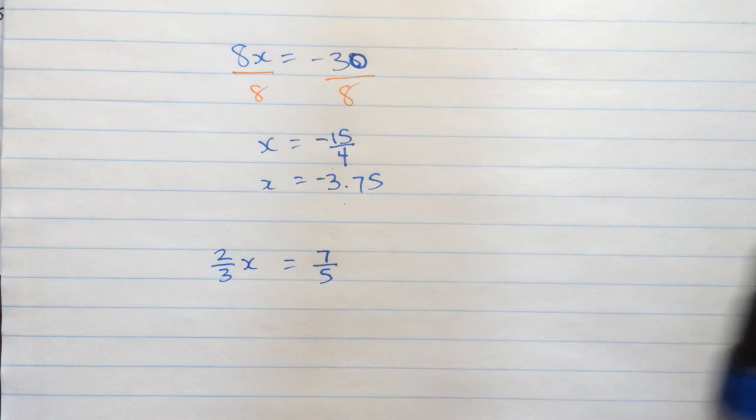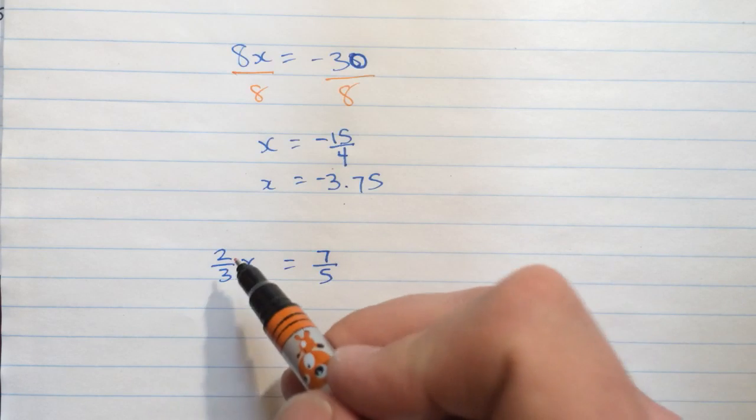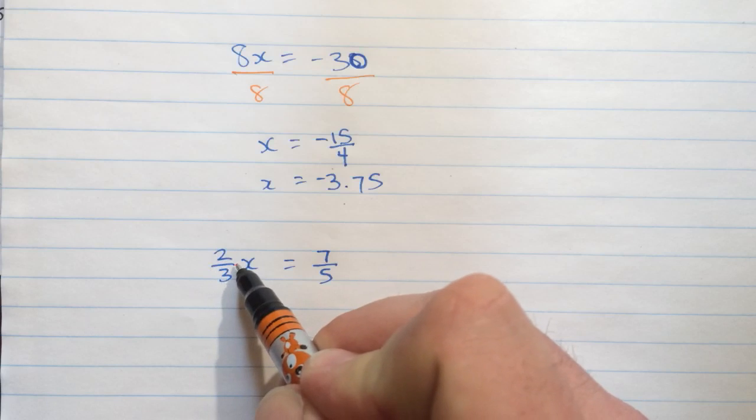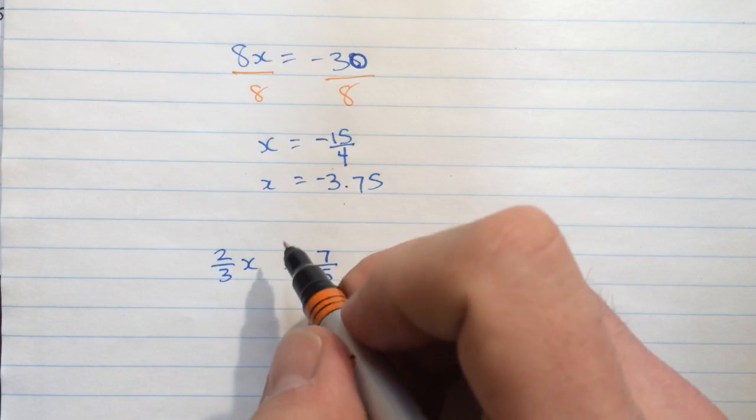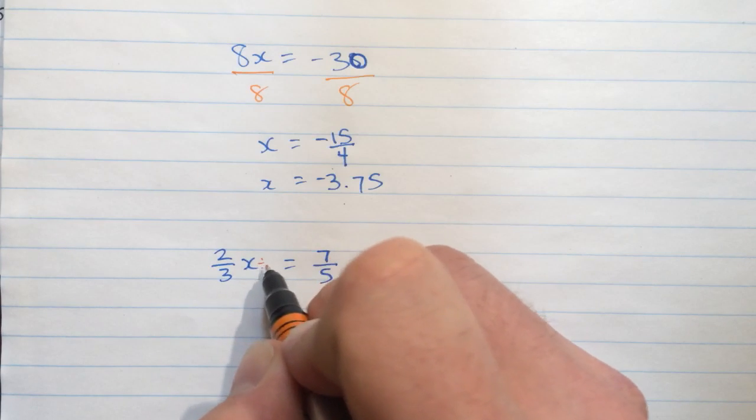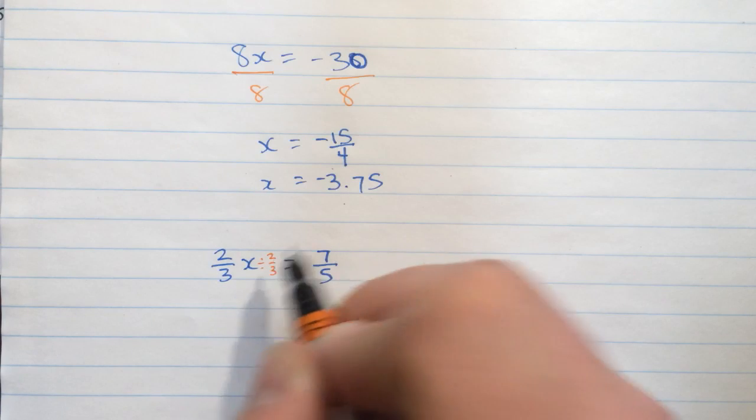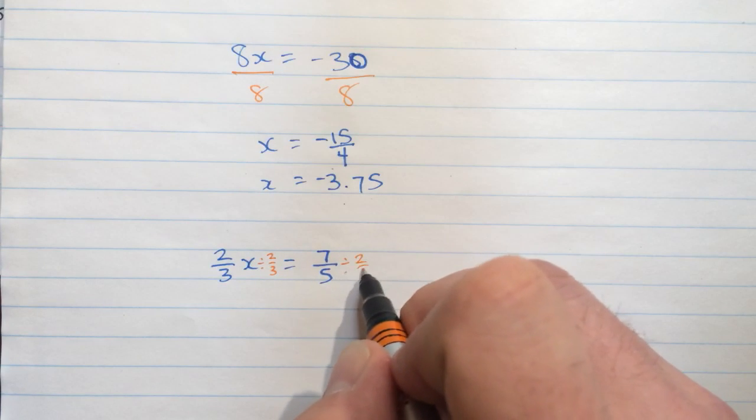Well, I can divide, once again, divide both sides by this coefficient, this 2 thirds here. I'm going to do it that way first. There's another way to do this. I'm going to divide by 2 thirds this whole side of the equation. And I'm going to divide this side by 2 thirds as well.